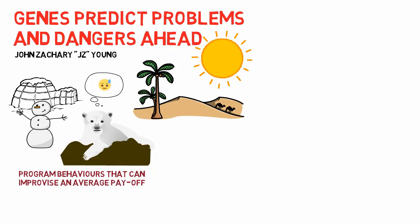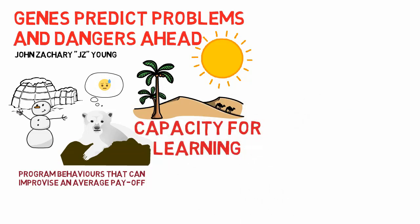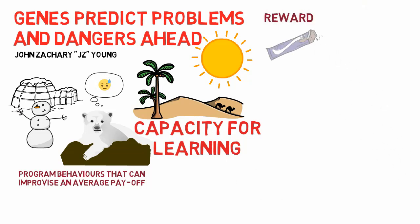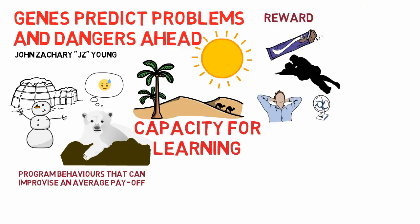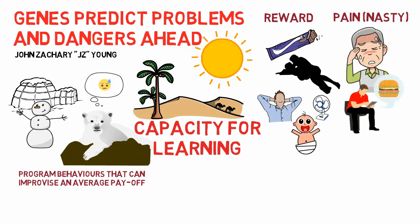Gene survival is the currency of evolution and all genes in the colony agree on this priority. Another way to solve the prediction problem in unpredictable environments is to build a capacity for learning — for example, a list of rewarding things such as sugar in the mouth, sexual pleasure, mild temperature, a smiling child, and nasty things like pain, nausea, an empty stomach, or a screaming child.